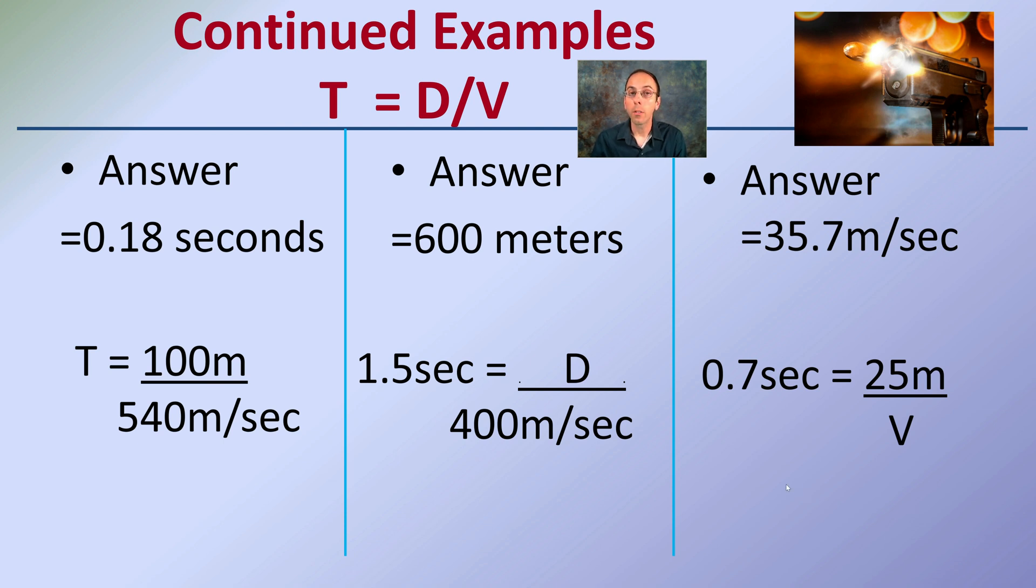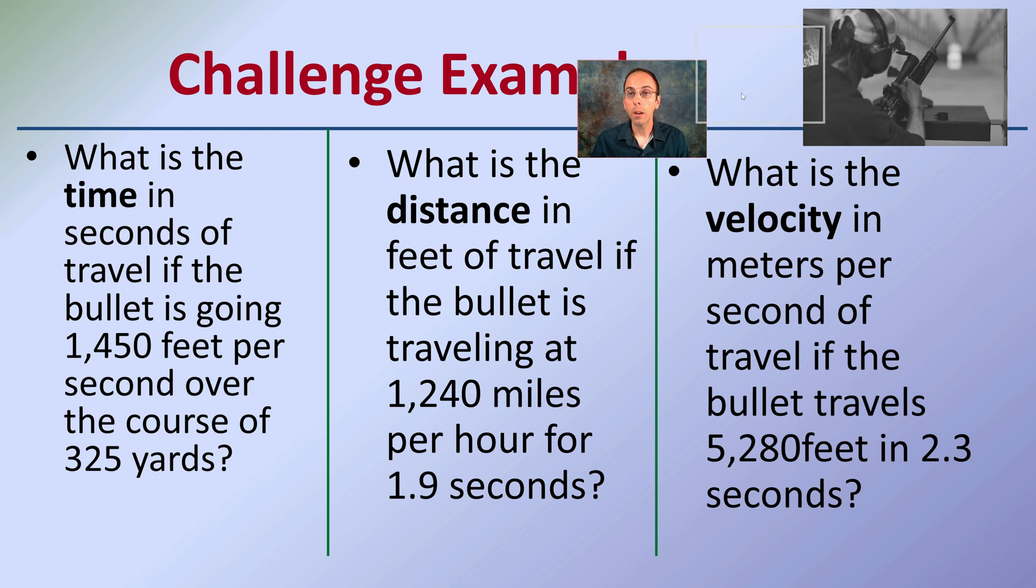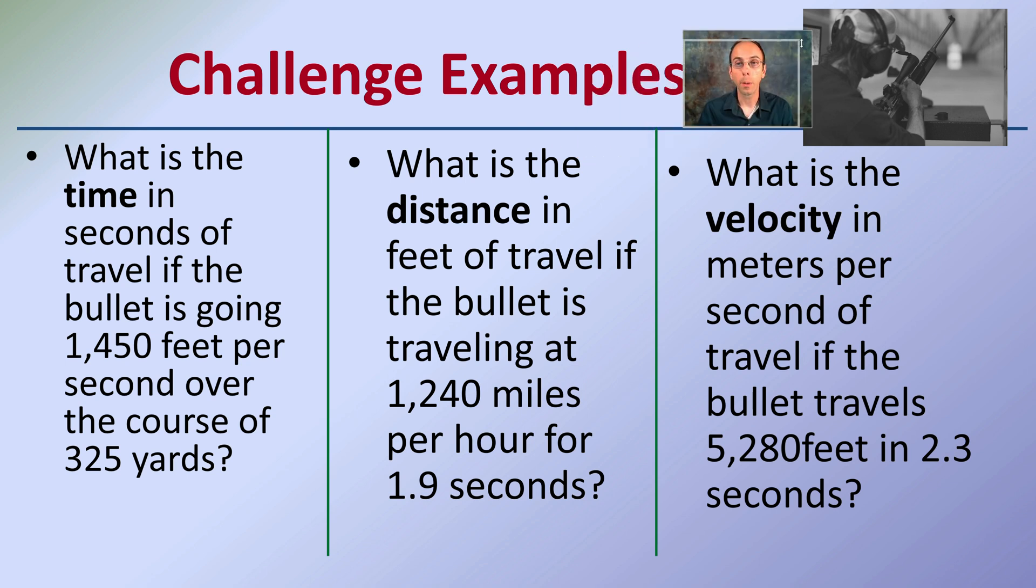Now, those were kind of basic examples. I've gone through here, and I've developed what I call challenge examples. What makes them challenging is not that the equation's changed by any means. You're still solving the same equation for time, distance, and velocity. But here you may have to change the units you use. For example, here I give you feet per second and yards. Here I give you miles per hour in seconds. And I'm looking for the velocity, and I'm giving you feet in seconds. So this might require a little bit of unit conversions to keep in mind there. This is what makes these challenge examples.